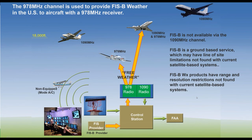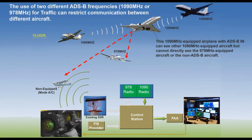I'd recommend getting yourself a Stratus and looking at it on an iPad compared to what you're seeing with your XM, then making the decision if you want to unplug and save your $49 per month. For GA, FISB is great and it's free.